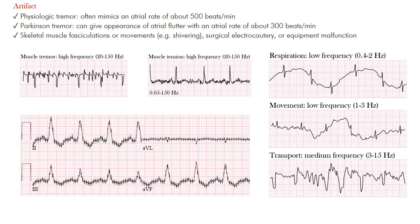Some things to note: physiologic tremor often mimics a fast atrial rate, some say around 500 beats per minute. Another thing you can see is Parkinson's tremor — these patients have a resting tremor, so if you have limb leads on and the tremor is out of control, that can give the appearance of atrial flutter, around 300 beats per minute. It's really important to know the patient's underlying clinical scenario.